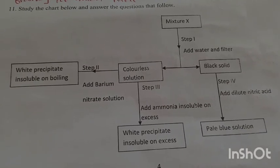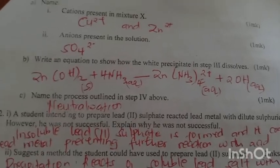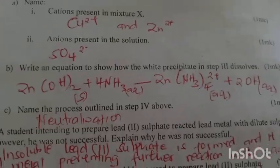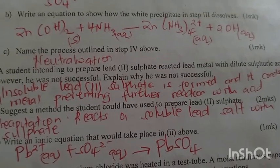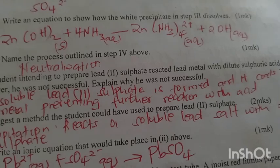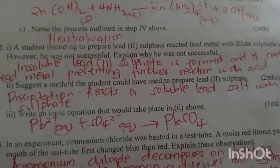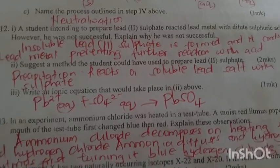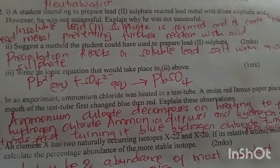Name the cations present in the solution. The cations present are copper and zinc. The anions present are sulfate ions. Write the equation to show how the white precipitate in step three dissolves. Zinc hydroxide plus ammonia gives zinc complex plus hydroxide ions. Name the process. It's called neutralization reaction.